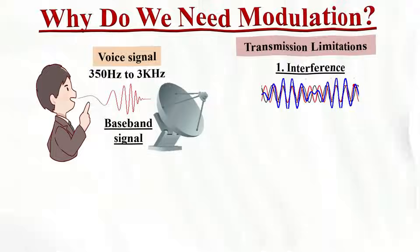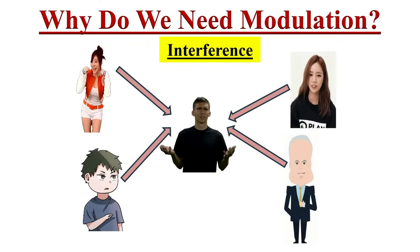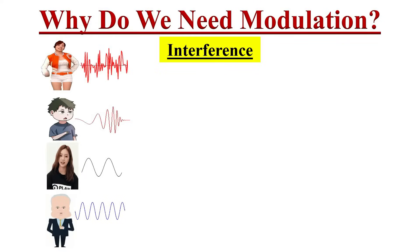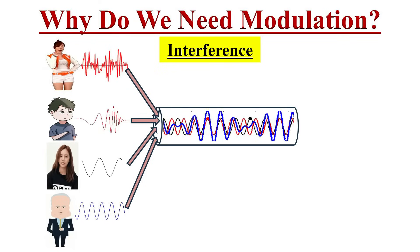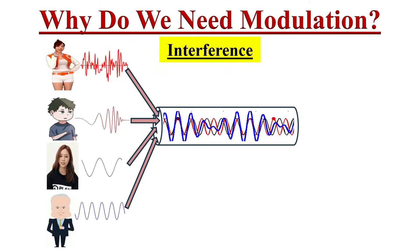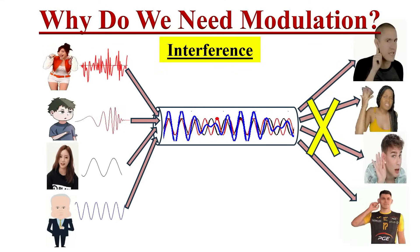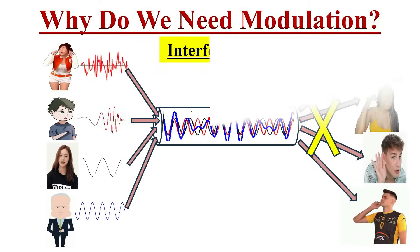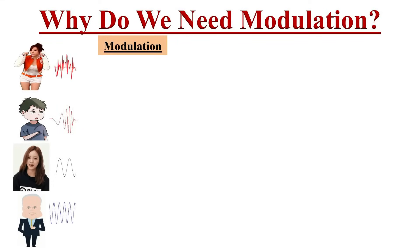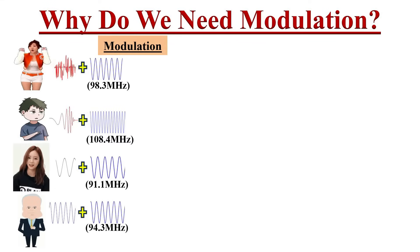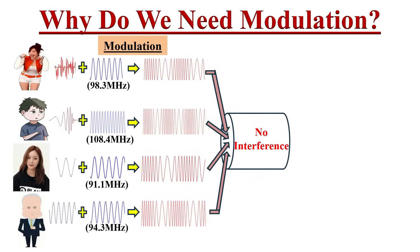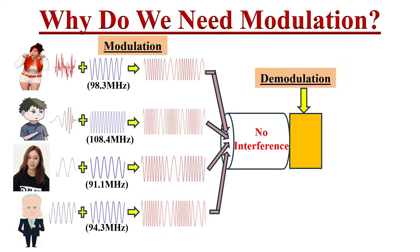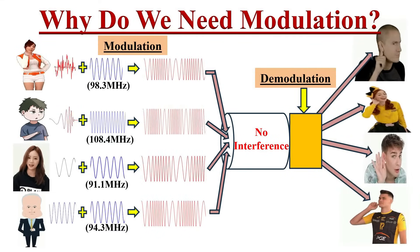The first limitation is interference. Just imagine that if multiple persons are talking to one person at the same time, that person won't understand anything. Likewise, if multiple voice signals in the same frequency range are transmitted without modulation through a single channel, there will be interference between them and at the receiver's end nobody will be able to receive the transmitted signal. But if you modulate each signal with a carrier signal, and all the carrier signals have different frequencies relatively far away from each other, then there won't be any interference and all signals can be demodulated at the receiver's end so that each message signal can be easily retrieved.